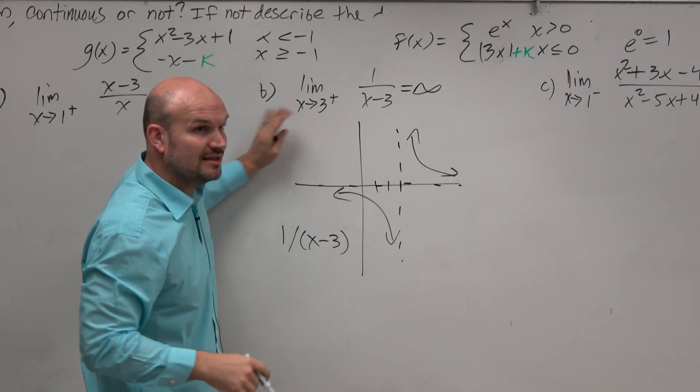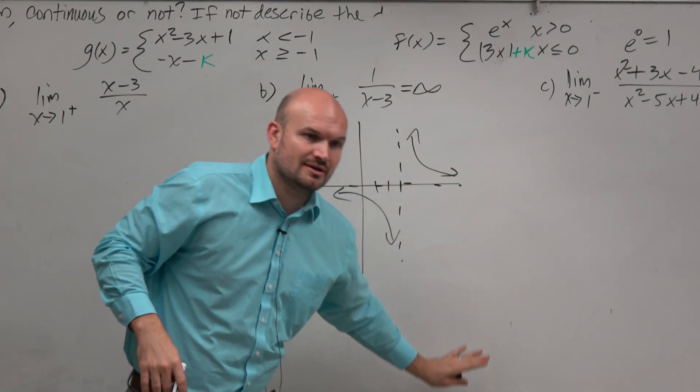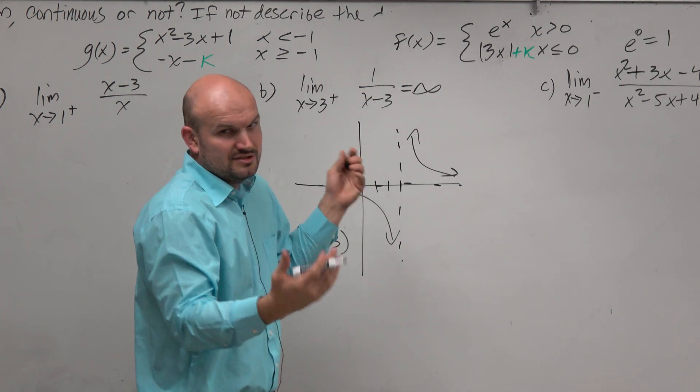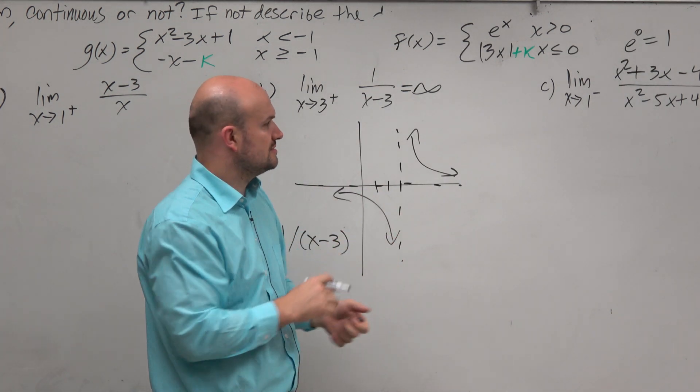If I was to change this to the left-hand limit, we would put the answer of negative infinity. If I didn't have a left or right hand specified, I just said the general limit, then we'd say does not exist, right? Because you have to approach the same value.